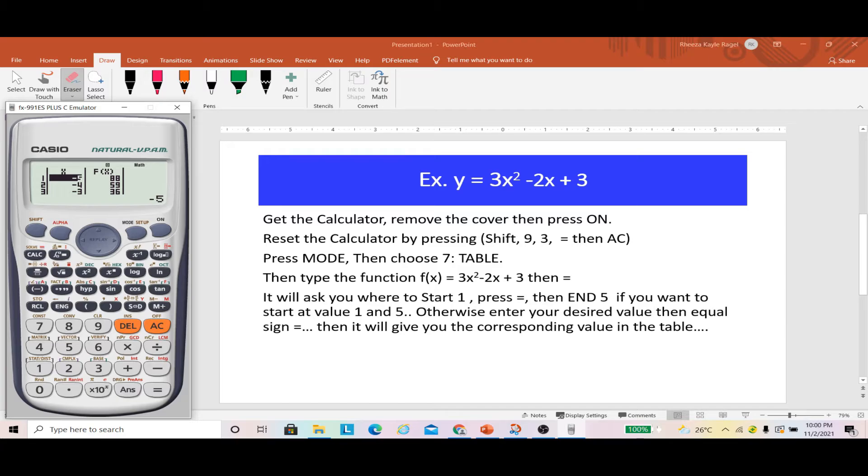There you have it. You will have your x as negative 5, and your f of x or your y will be 88, negative 4 gives 59, negative 3 gives 36, negative 2 gives 19, negative 1 gives 8, and 0 gives 3.